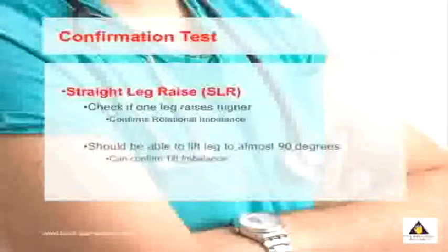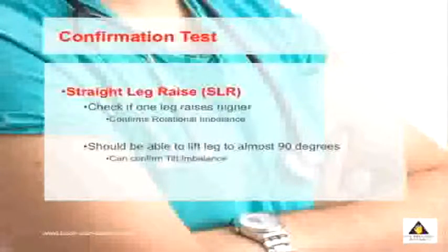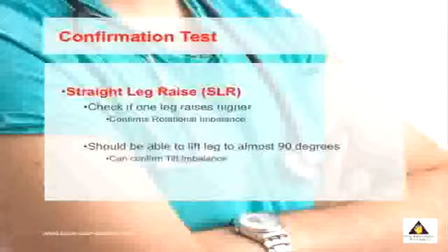There are two things you will note. First, you may find that you can lift one leg higher than the other — if this is the case, it confirms that you have a rotational imbalance. Secondly, people should be able to lift their leg up to almost 90 degrees. If you can't lift your leg to 90 degrees and both legs are similar, then you may have tilt type imbalances.